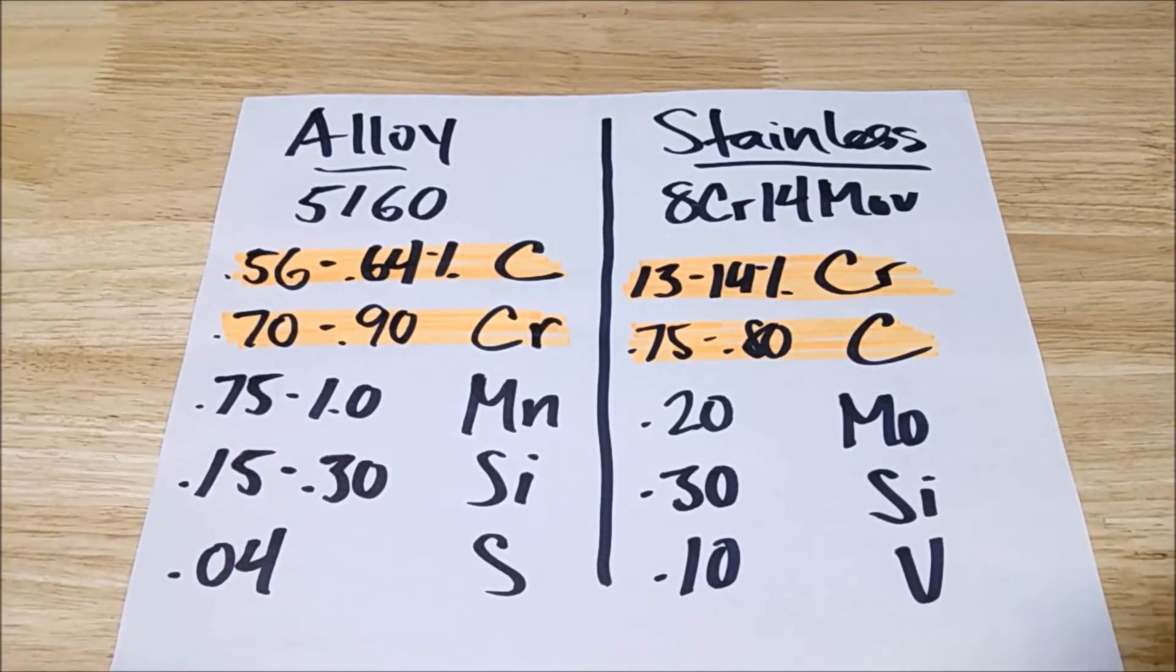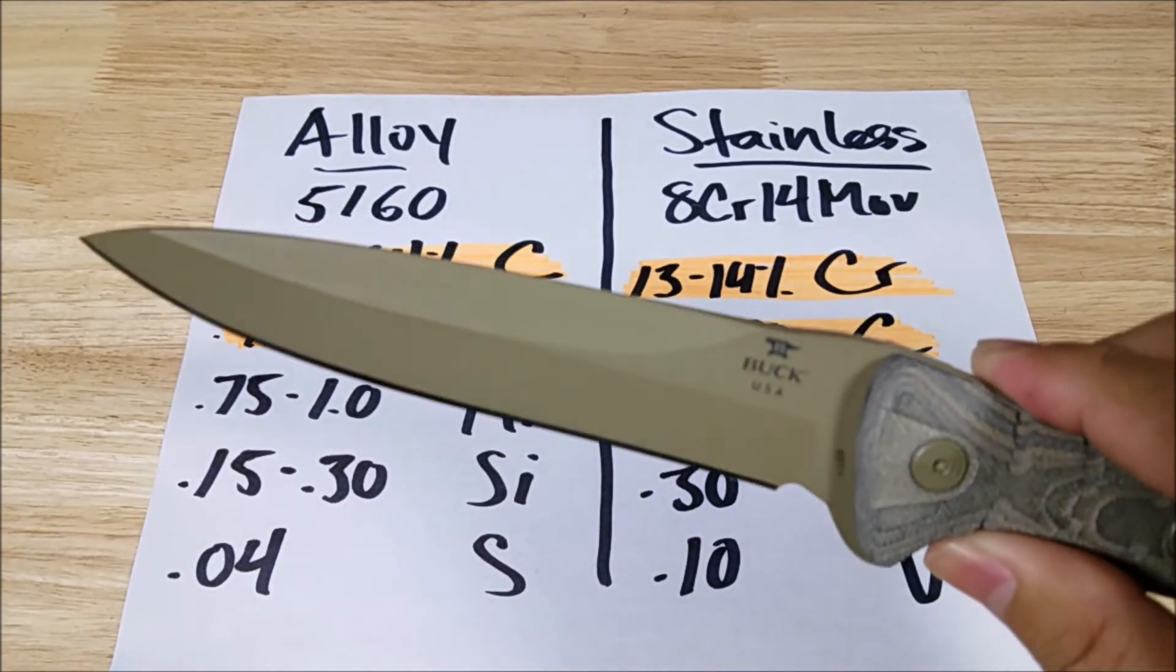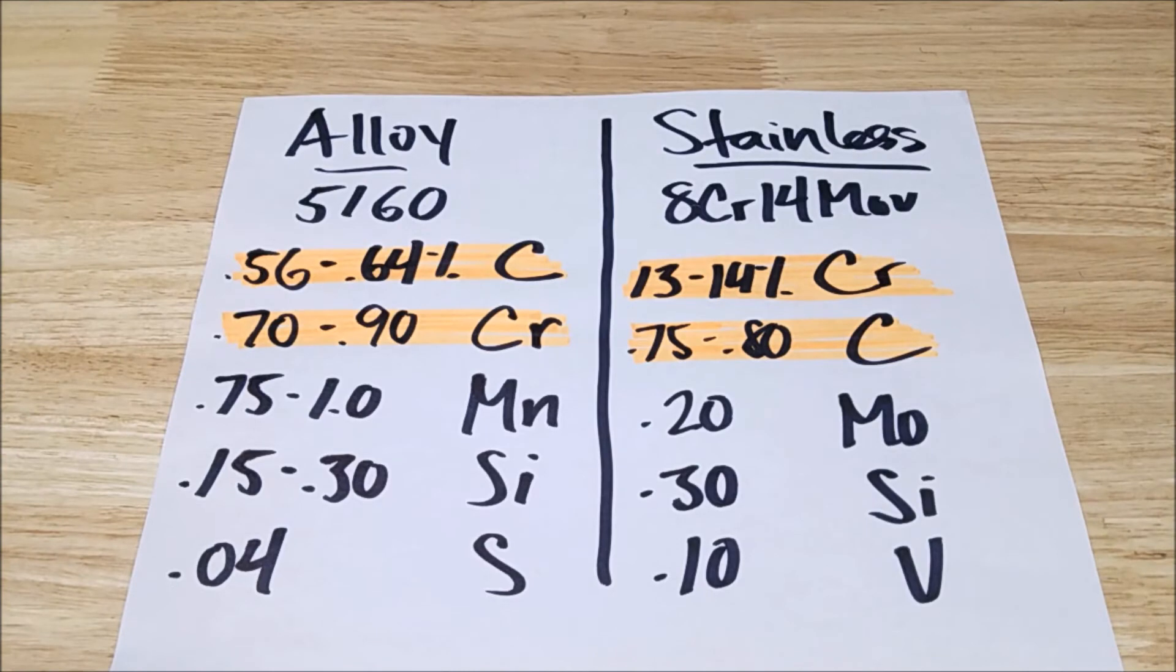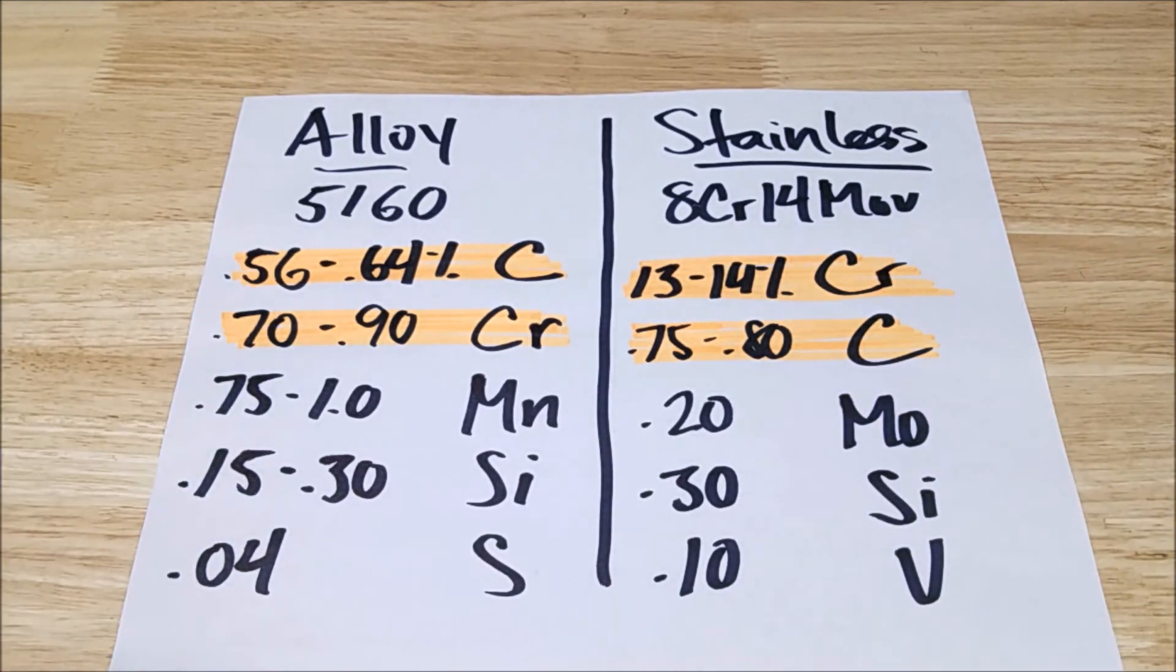And then Buck Knives. Buck Knives has their new Combat Knives series. This is made of 5160. This thing is going to be a great review. But those are just some quick examples of knives that are made out of these two. And again, if we just follow chromium and carbon, we can see what the steel is supposed to do.